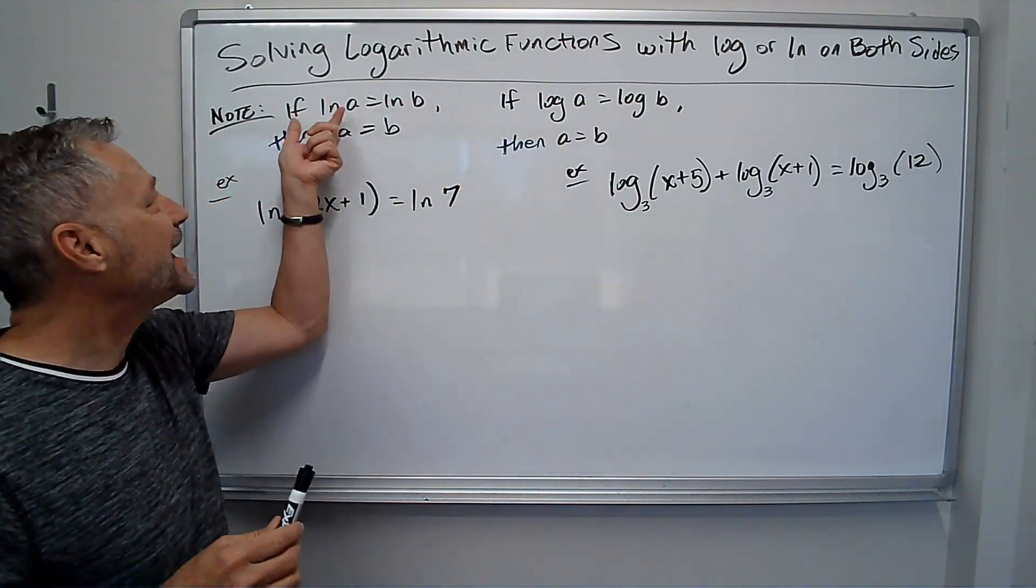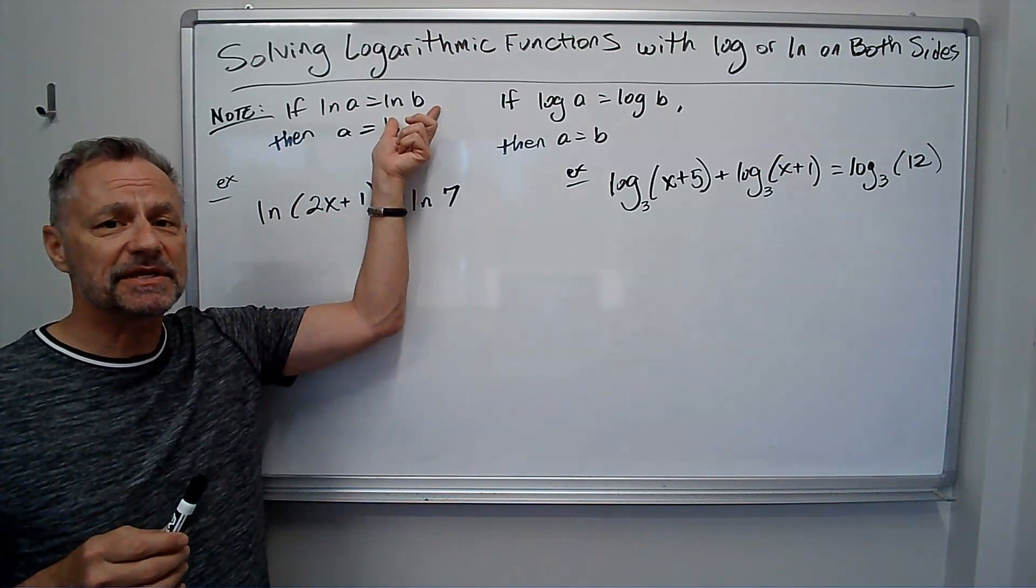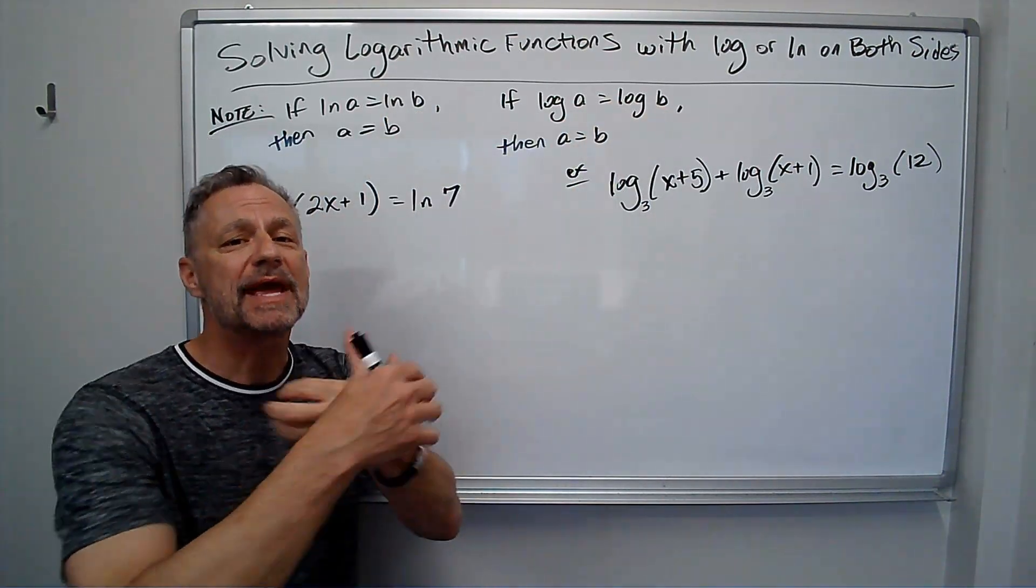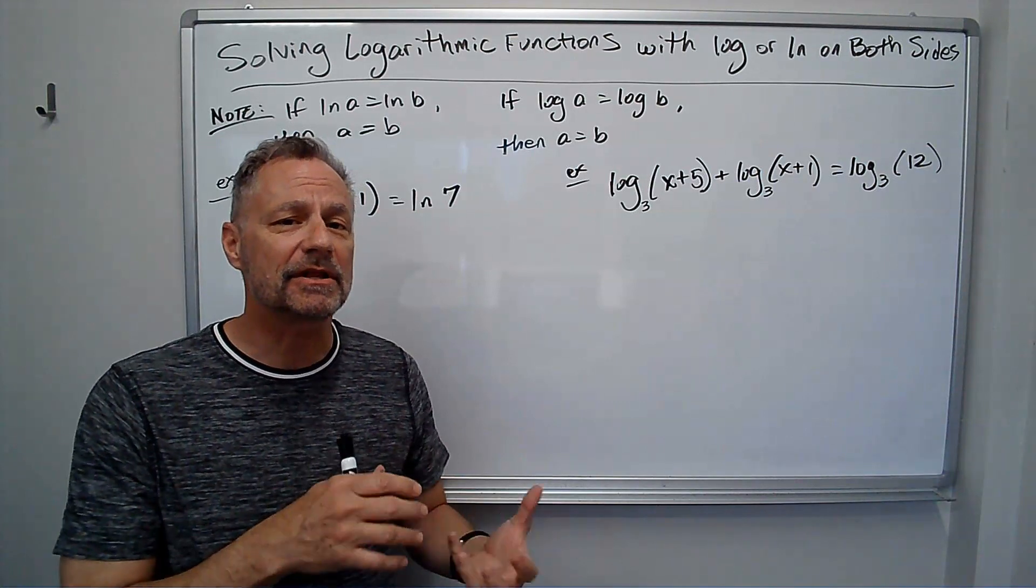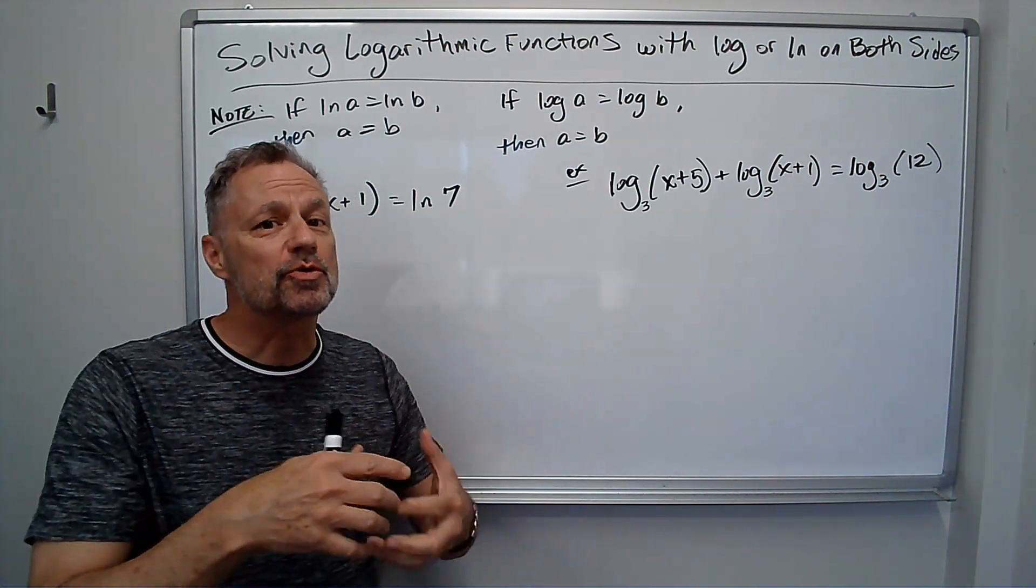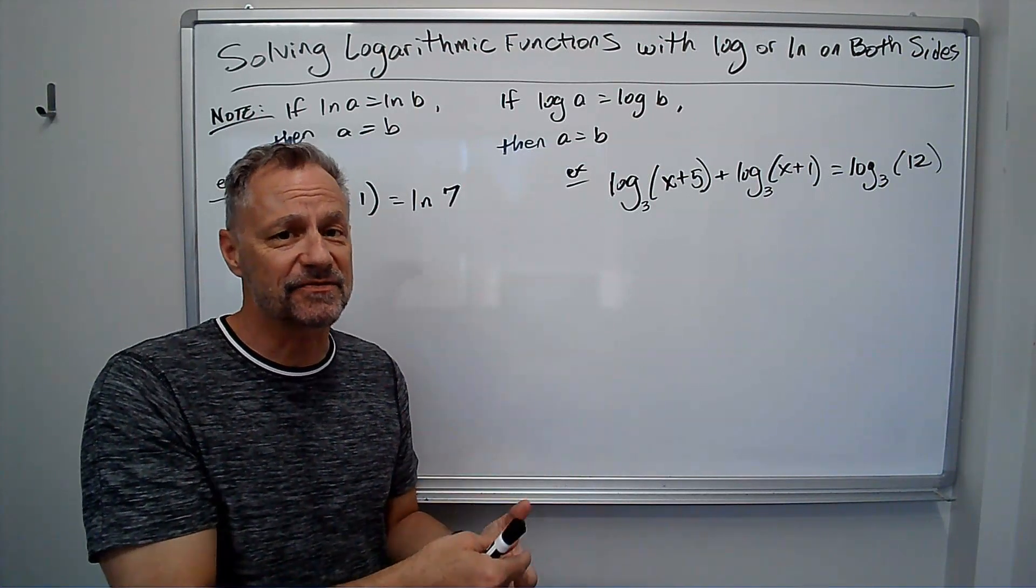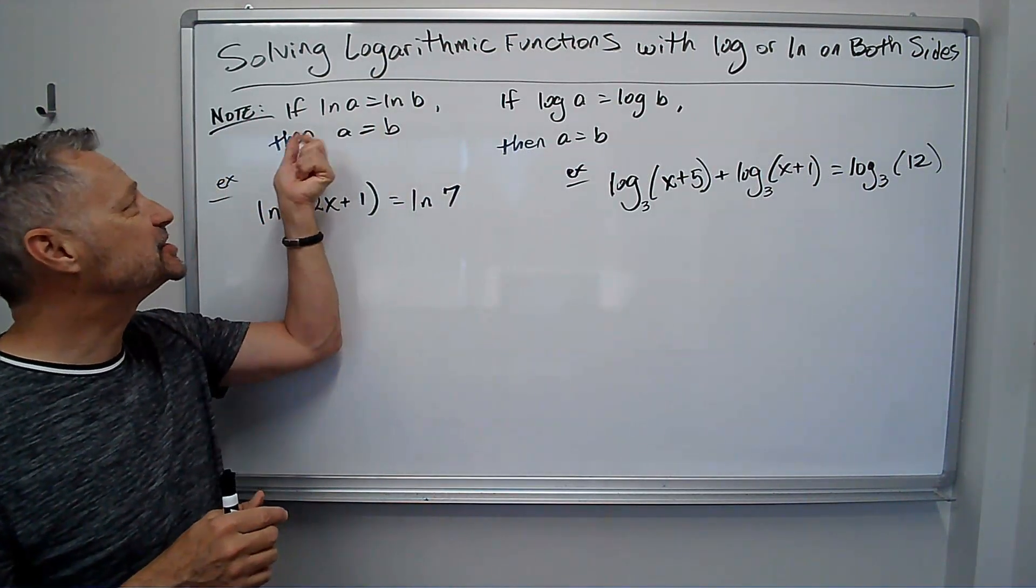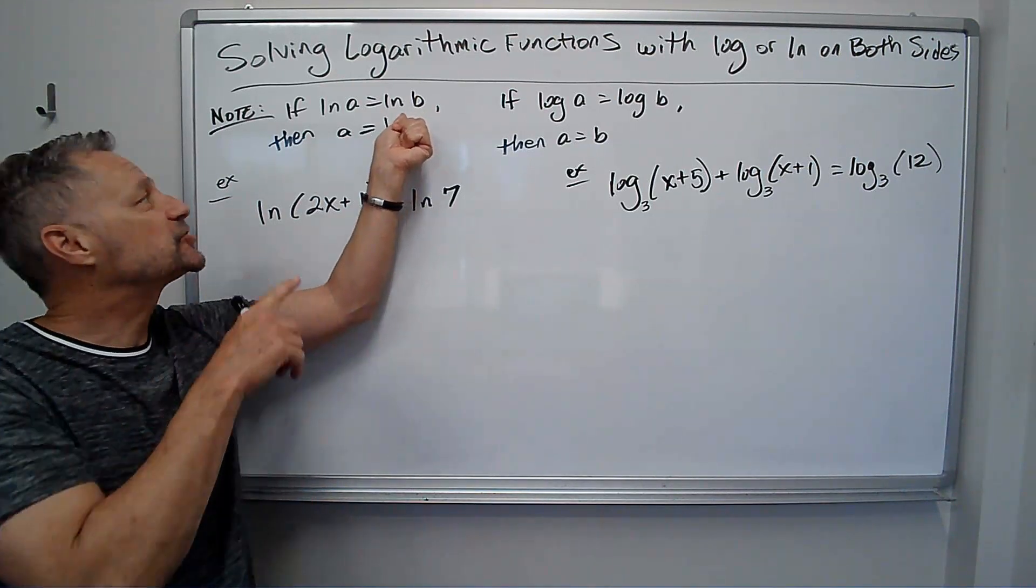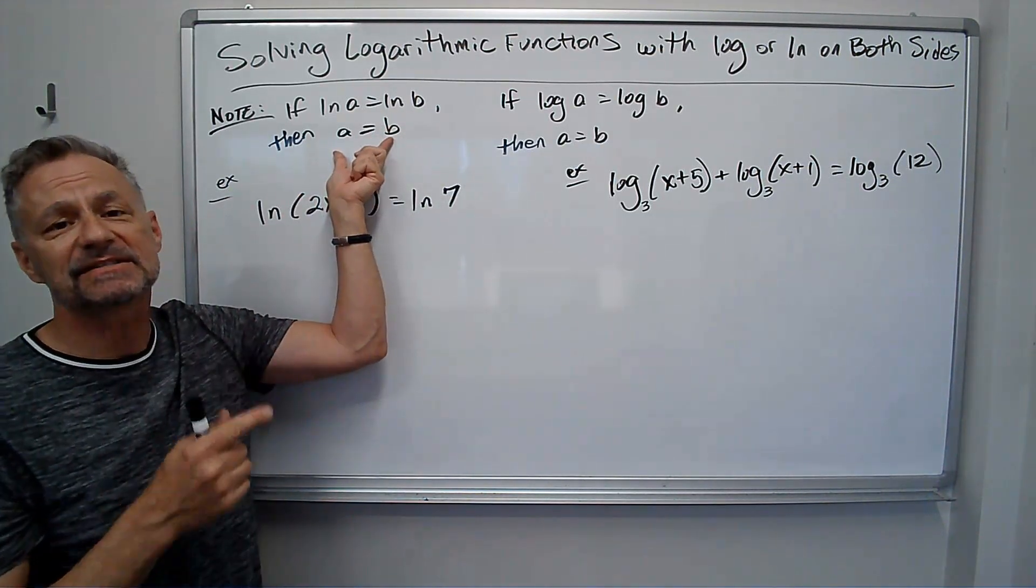I can have ln of something equals ln of something or log of something equals log of something. You can't have an additional term that doesn't have ln or log. I'll show you what happens if that's the case. I have another video I'll link to the end of this video, but in this case I just have for instance ln of a equals ln of b. If that's true, the argument a has to equal b.